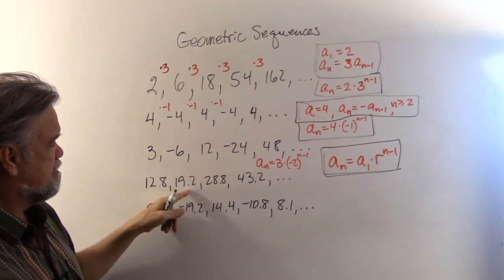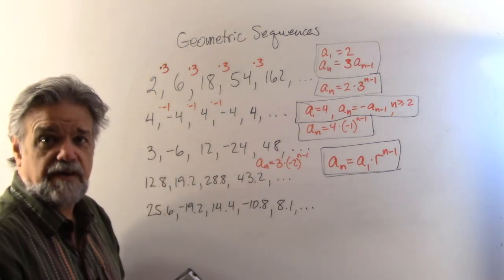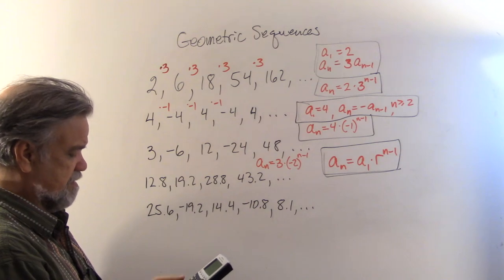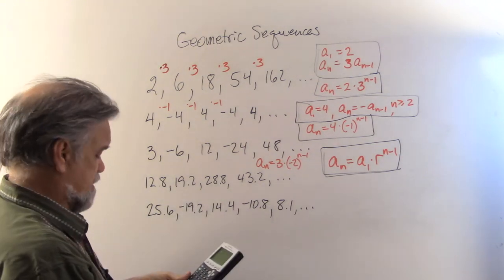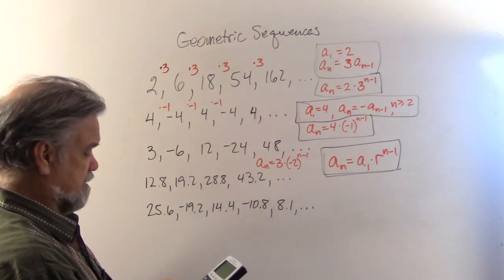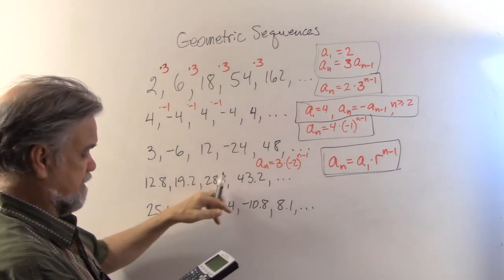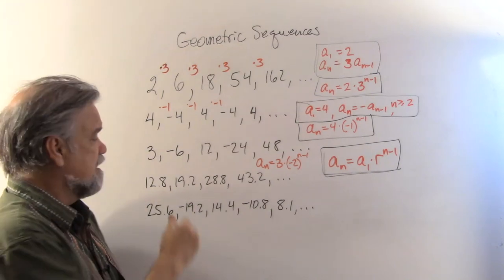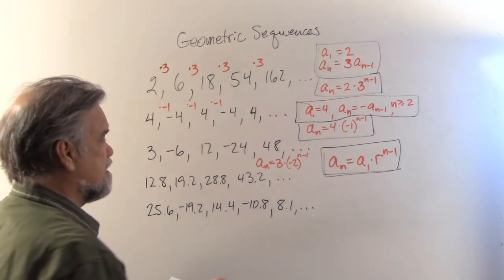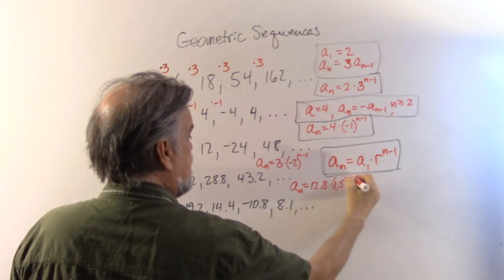Next: 12.8, 19.2, 28.8, 43.2. I'll use my calculator — 19.2 divided by 12.8 is 1.5. Checking: 19.2 times 1.5 is 28.8, times 1.5 again is 43.2. So the ratio r is 1.5, and the explicit formula is a sub n equals 12.8 times 1.5 to the n minus 1 power.